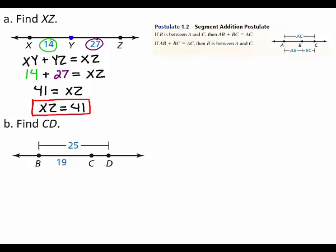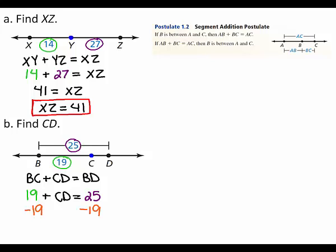In part B, point C is between B and D. So, by the Segment Addition Postulate, the length of segment BC plus the length of segment CD equals the length of segment BD. From the diagram, you can see that the length of segment BC is 19 and the length of segment BD is 25. To find the length of segment CD, you can subtract 19 from both sides of the equation. This gives you the length of segment CD equals 6. Therefore, the length of segment CD is 6.